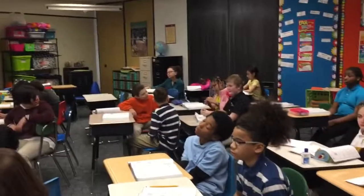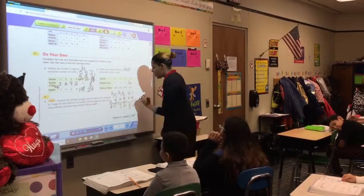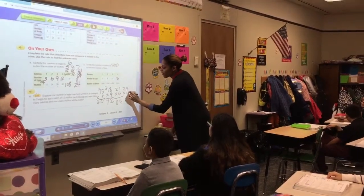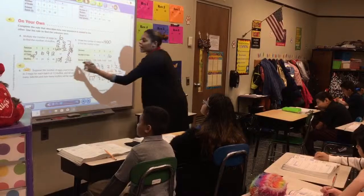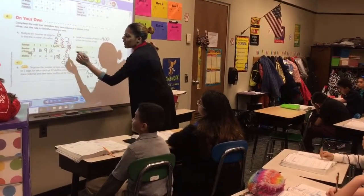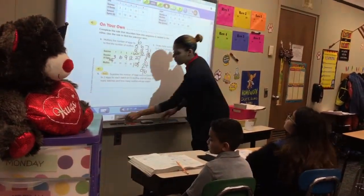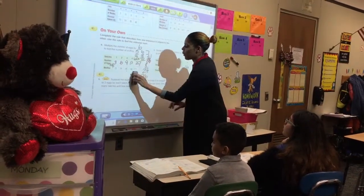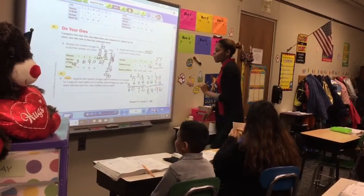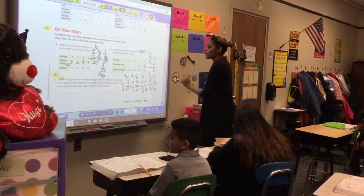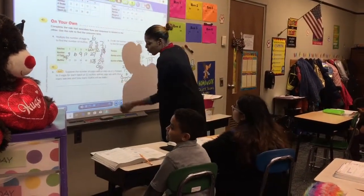8 batches: 21 plus 3 is 24. And 24 times 4 — 4 times 4 is 16, and 2 times 4 is 8 plus 1 — is 96 muffins. And now 9 batches: 24 plus 3 is 27. And 27 times 4 — 7 times 4 is 28, and 2 times 4 is 8 plus 2 — is 108 muffins.